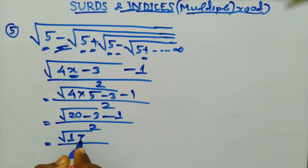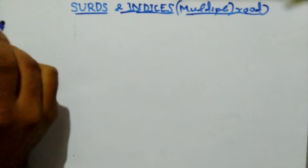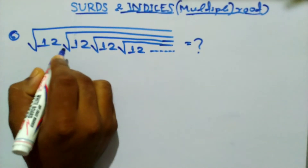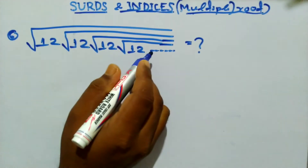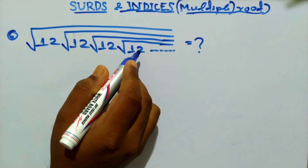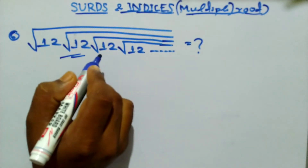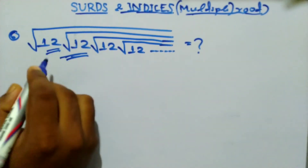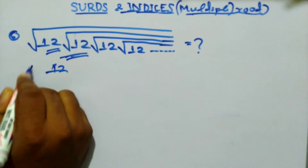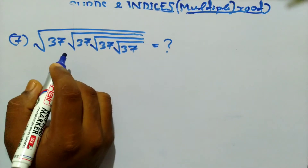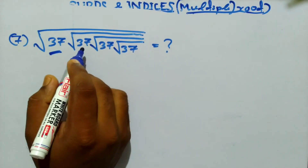This is the answer. Next question: here you can see no signs are involved — all the root numbers are the same. When this type of question is given, your answer must be the number itself. The number is 12, so 12 is the answer.